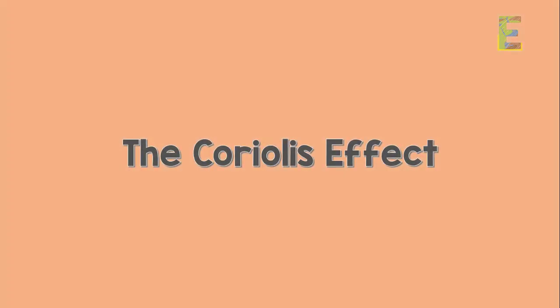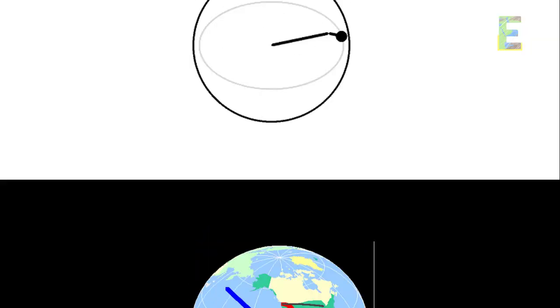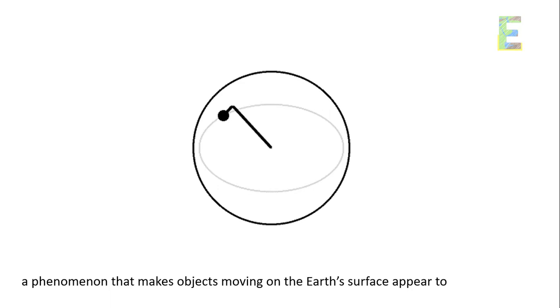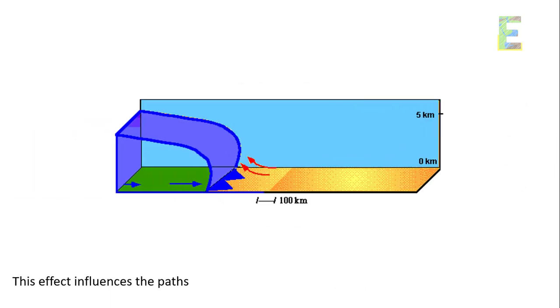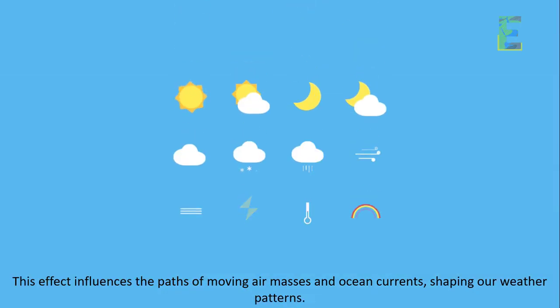The Coriolis effect. Earth's rotation also gives rise to the Coriolis effect, a phenomenon that makes objects moving on the Earth's surface appear to curve due to its rotation. This effect influences the paths of moving air masses and ocean currents, shaping our weather patterns.